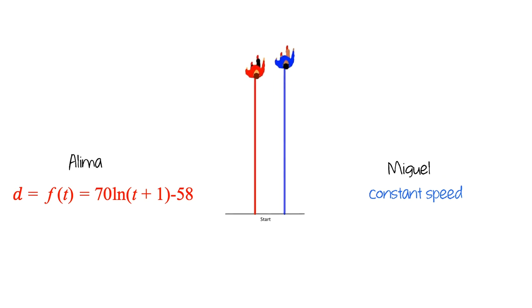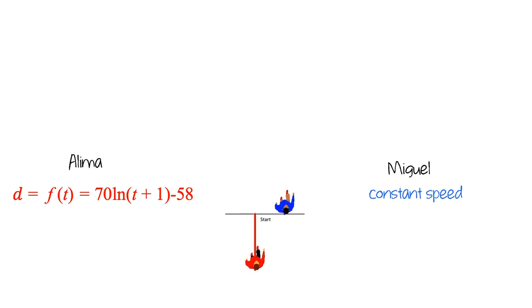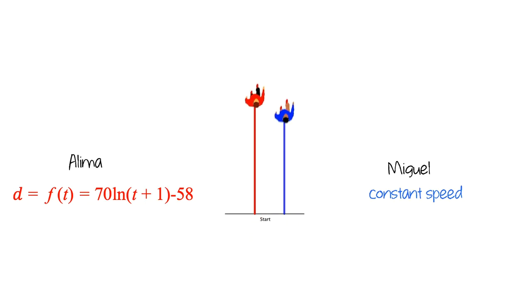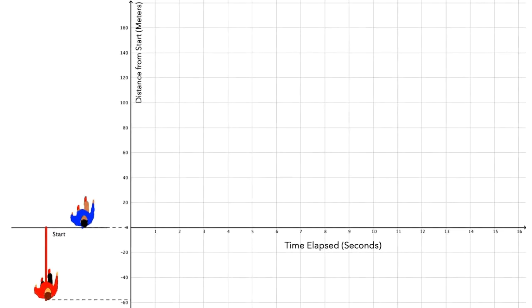Let's rewind this race and think about the average speed. As you watch, consider how you might determine Alema's average speed from 2 seconds to 14 seconds after she passed the start line. To help us think about this, let's make a graph of the relationship between Alema and Miguel's distance from the start line and the number of seconds elapsed since Alema passed the start line.